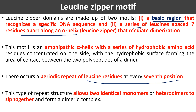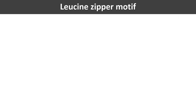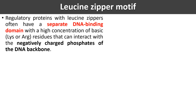This repeated structure allows two identical monomers or heterodimers to zip together and form a dimeric complex. Initially, it was thought that the two dimers form a zip-like structure — that's why it is called the zipper motif — but later it was found that it is not a zip-like structure; the two are arranged side by side.